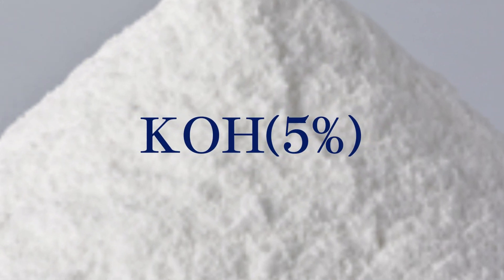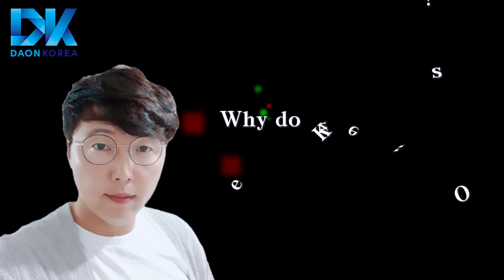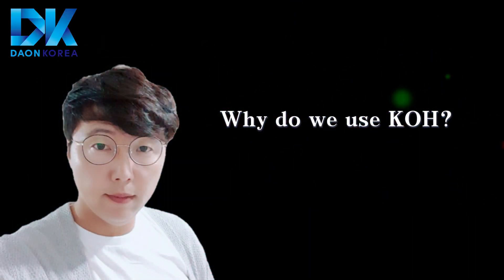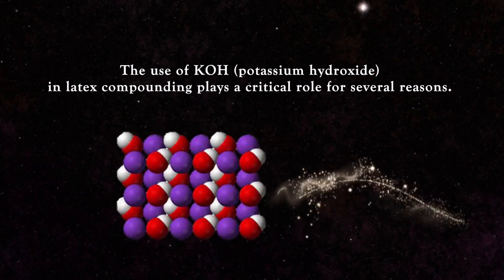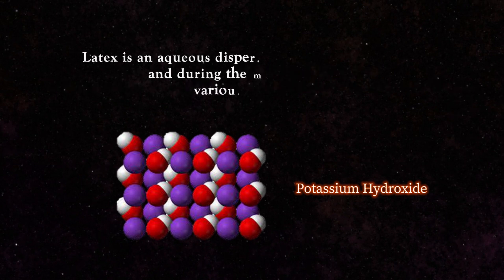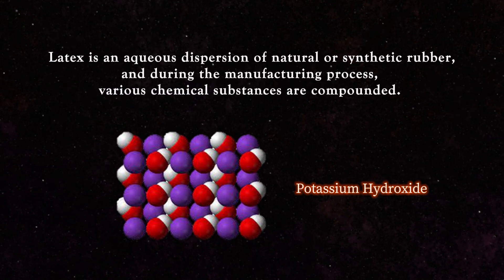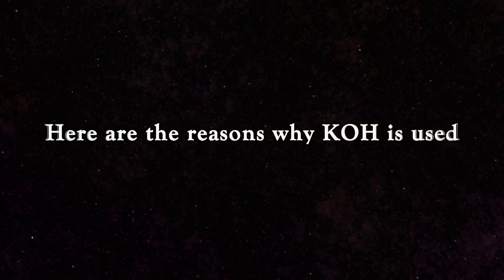Hello, everyone. Welcome to Day in Korea YouTube channel. Today, I'm going to talk about the role and use of KOH. The use of potassium hydroxide in latex compounding plays a critical role for several reasons. Latex is an aqueous dispersion of natural or synthetic rubber, and during the manufacturing process, various chemical substances are compounded. Here are the reasons why KOH is used.